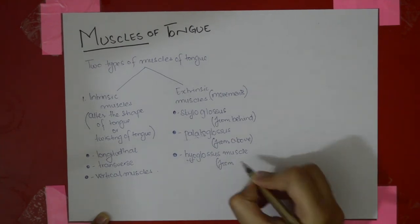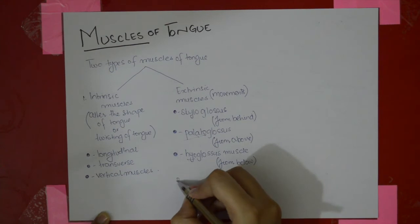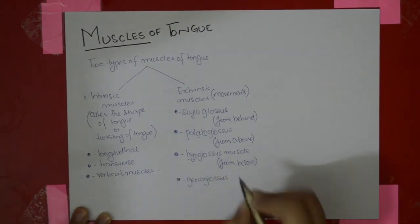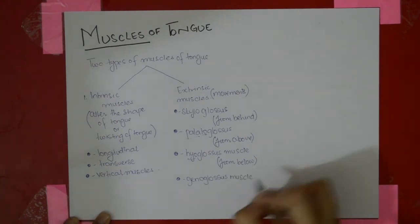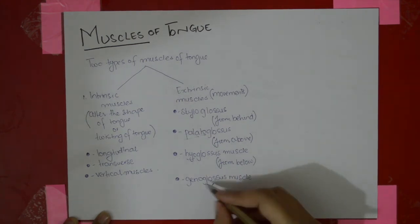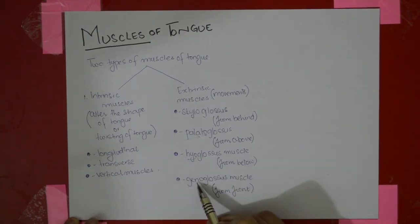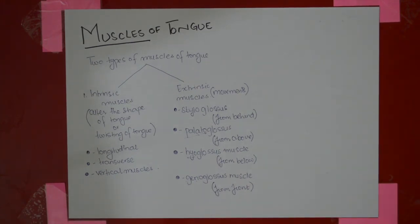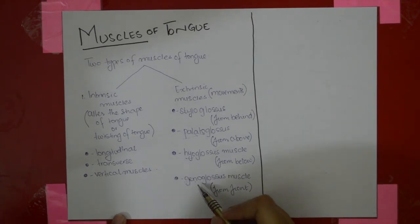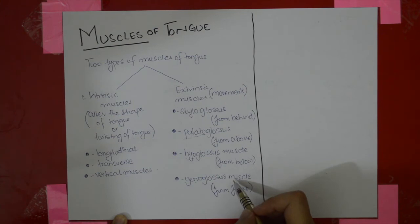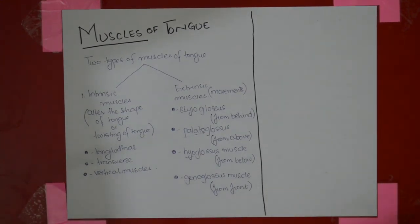Then there is the genioglossus muscle. From 'genio' we know it originates from the genial tubercle of the mandible. One important point about the genioglossus muscle: this muscle is also called the safety muscle of the tongue. It's called this because if this muscle is paralyzed, the tongue will fall back onto the oropharynx and block the air passage, and the person will die of suffocation. This muscle is also pulled forward when anesthesia is given to a patient — that's how important it is.